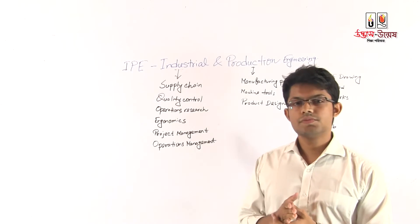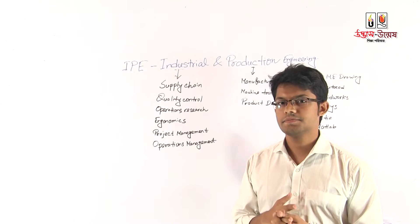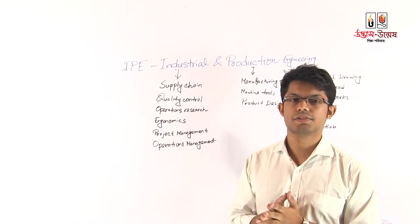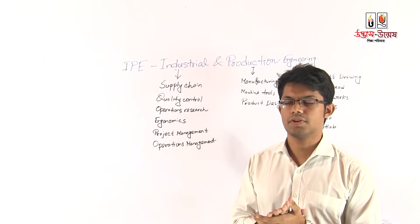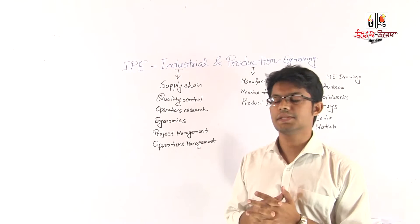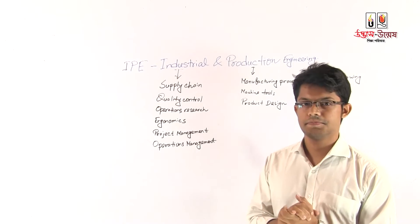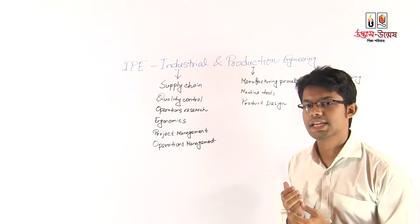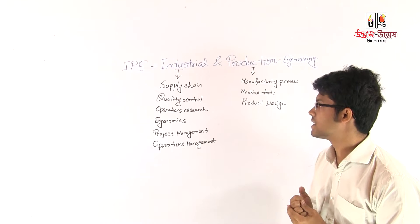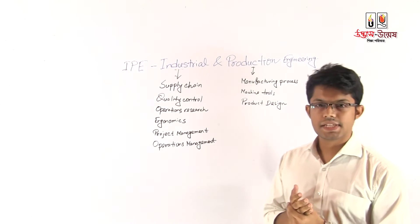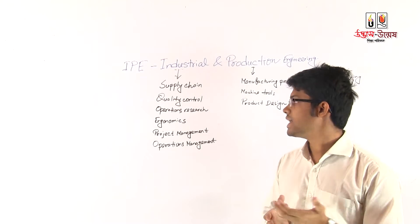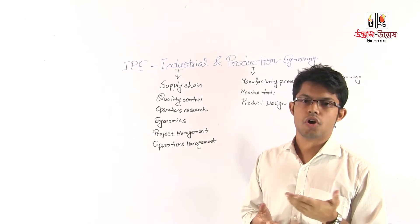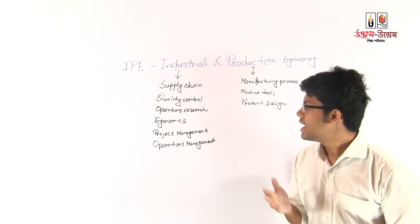IP is Industrial and Production Engineering. Industrial engineering and production engineering are different fields. Industrial engineering is mainly about optimization, while production engineering is also known as manufacturing engineering. Key topics include supply chain, quality control, operations research, and ergonomics.